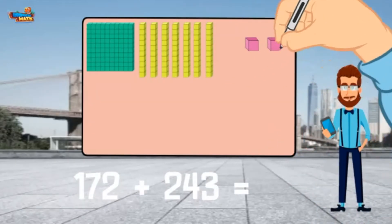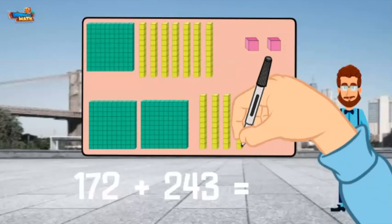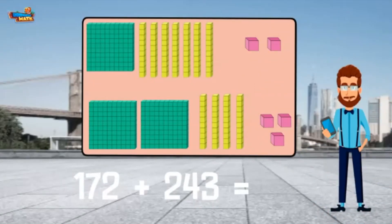Then I add 2 hundreds, 4 tens, and 3 ones to the model. I need to find the total value represented by base 10 blocks.